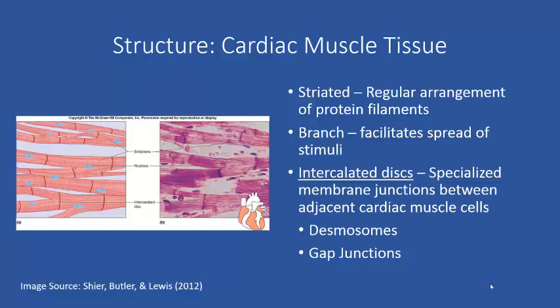Another aspect of cardiac muscle tissue that is different from skeletal muscle is the presence of structures known as intercalated discs. In the diagram you will see lines — both in the picture and the drawing — running in the same direction as the striations but darker.